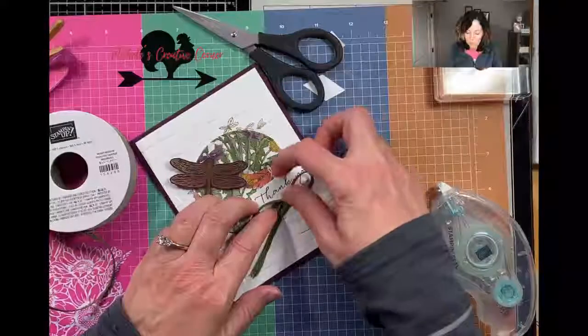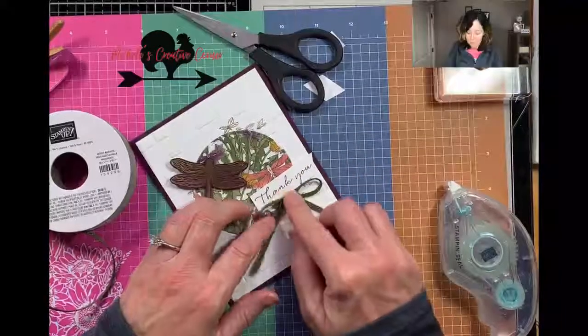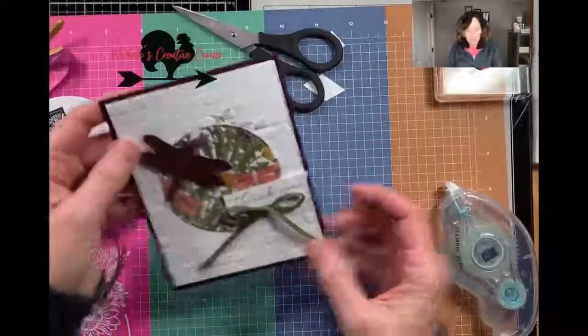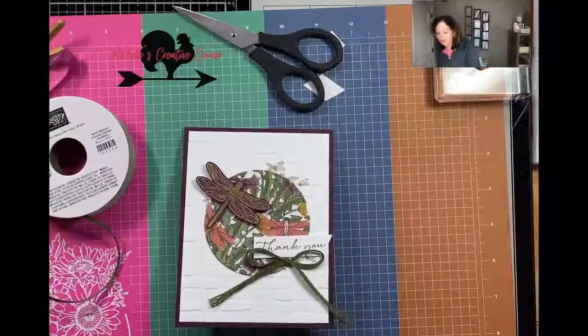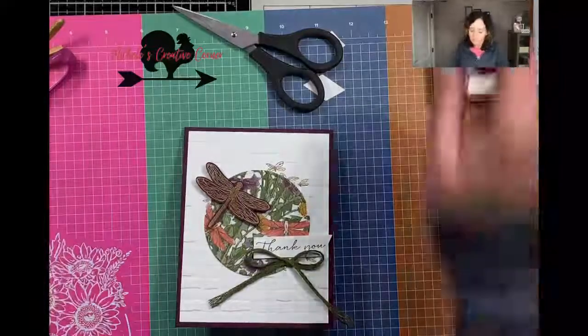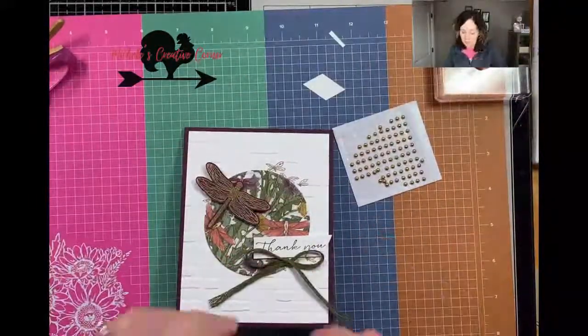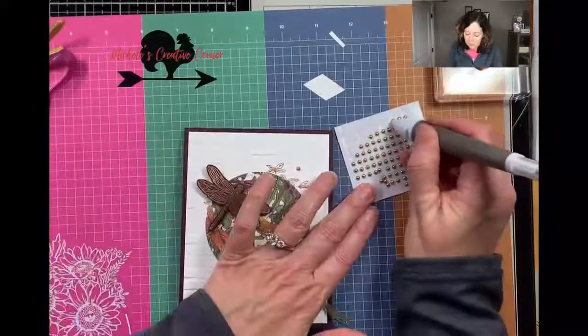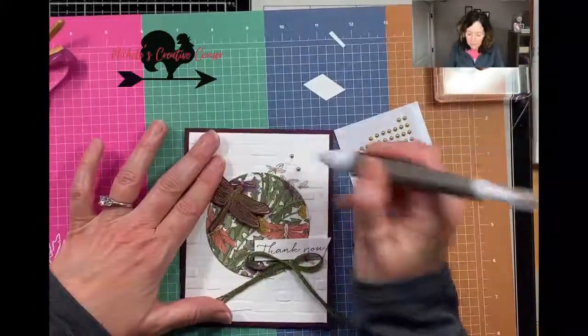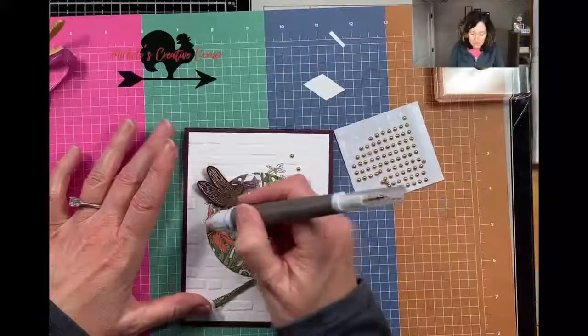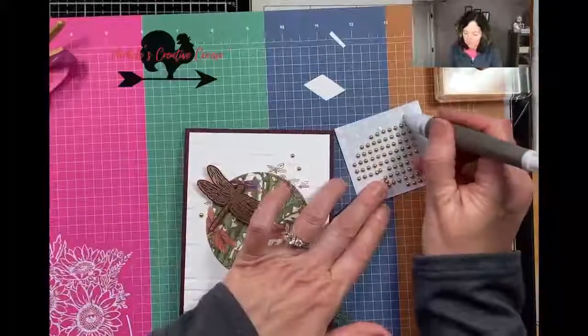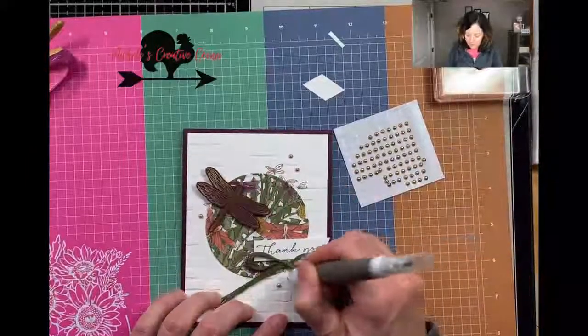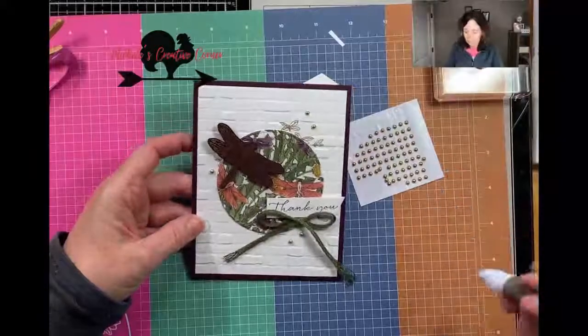April 24th is card club with the Snailed It bundle. The cards are super cute. I think the last thing that we need is a little bit of bling. I decided with the gold embossing I would do a little bit of these gold metallic pearls. I love these pearls. Now we all know that positioning embellishments is not my strength, but I got an odd number on there. I think that's the most important part.